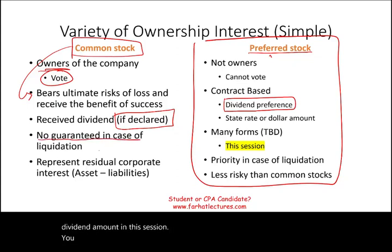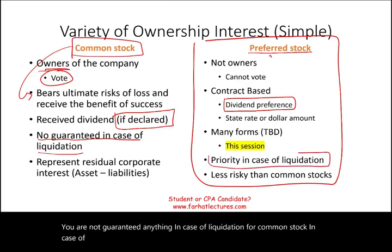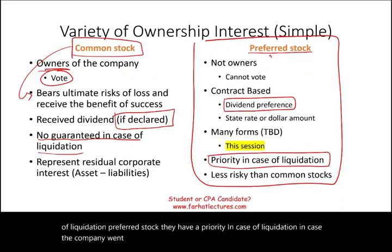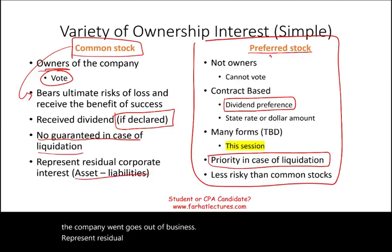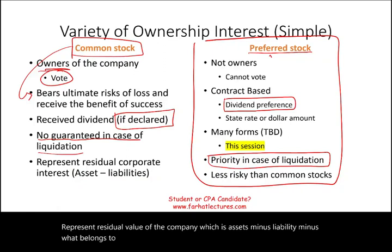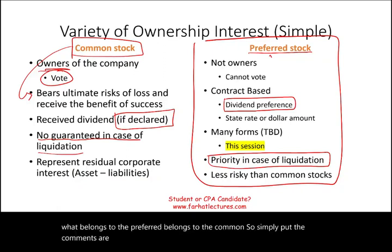In case of liquidation, common stockholders are not guaranteed anything. Preferred stock has a priority in case of liquidation — if the company goes out of business. Common stock represents the residual value of the company, which is assets minus liabilities minus what belongs to the preferred. Simply put, common shareholders are the last people to be paid in case of liquidation or any distribution of profit.